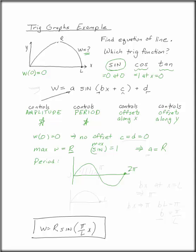What we have is between zero and L. So we need bx at x equals L to be equal to the same thing as pi.